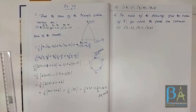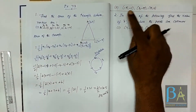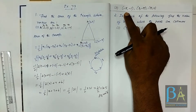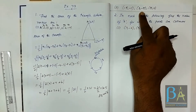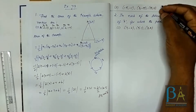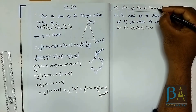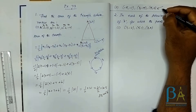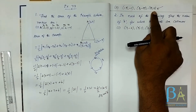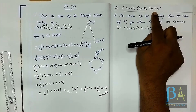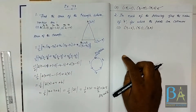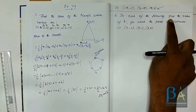I would like you to try the second part by yourself. The three vertices are (-5, -1), (3, -5), and (5, 2). You can try this yourself and let me know your answer in the comment section. If you run into any problems, please let me know there as well.